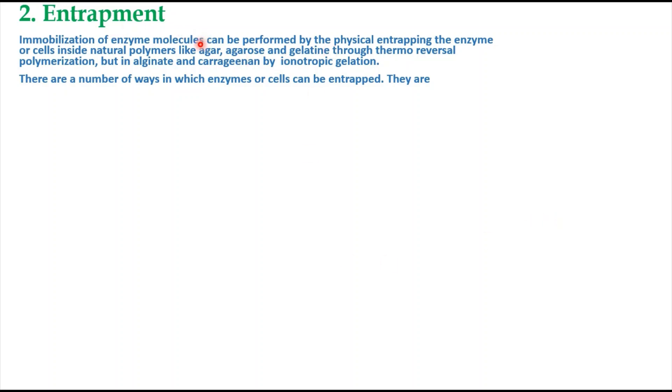Coming to the second method, entrapment: immobilization of enzymes or molecules can be performed by physically entrapping the enzymes or cells inside natural polymers like agar, agarose gel, and gelatin through thermoreversible polymerization, or in alginate and carrageenan by ionotropic gelation. This means you are encircling or arresting the enzyme, which is called entrapment.